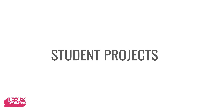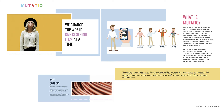I'll share and briefly talk about four of those projects. The first is Motatio — Latin for the word change — a technology-based clothing line where fabric is able to change colors and patterns. The idea is to create a hybrid fabric composed of regular threads and microfibers of copper. The two elements will be woven interspersed to create a new type of fabric that, when connected to a smartphone, people can customize colors and patterns for any desired occasion. As of today, the fashion industry is responsible for 10% of the world's pollution. This technology will help reduce the amount of carbon dioxide and pollution in the environment because it will be versatile enough that people only need a few garments and it is not mass consumed.